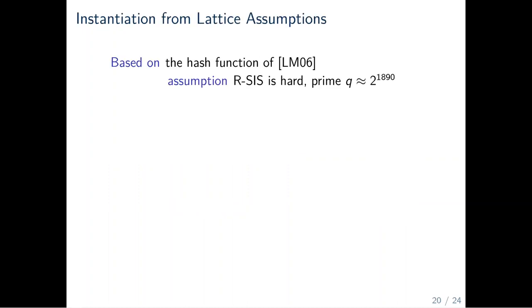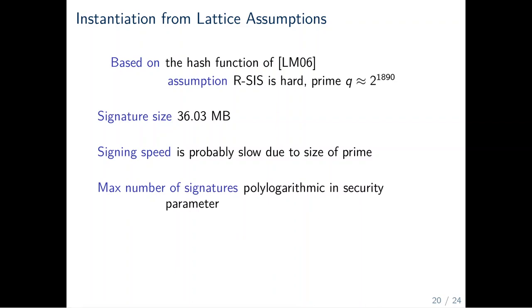For our framework, we provide a sample instantiation based upon the hash functions of Lyubashevsky and Micciancio. The underlying assumption is the hardness of the R-SIS problem. Here, the size of the prime is approximately 2 to the power of 1890. Our signatures are roughly 36 MB and the signing speed is probably quite slow due to the size of the prime. Further, the maximum number of signatures per issued key pair is polylogarithmic in the security parameter. This is due to the security exponentially degrading in the number of issued signatures. Only in this range, the ROS problem is information theoretically hard.